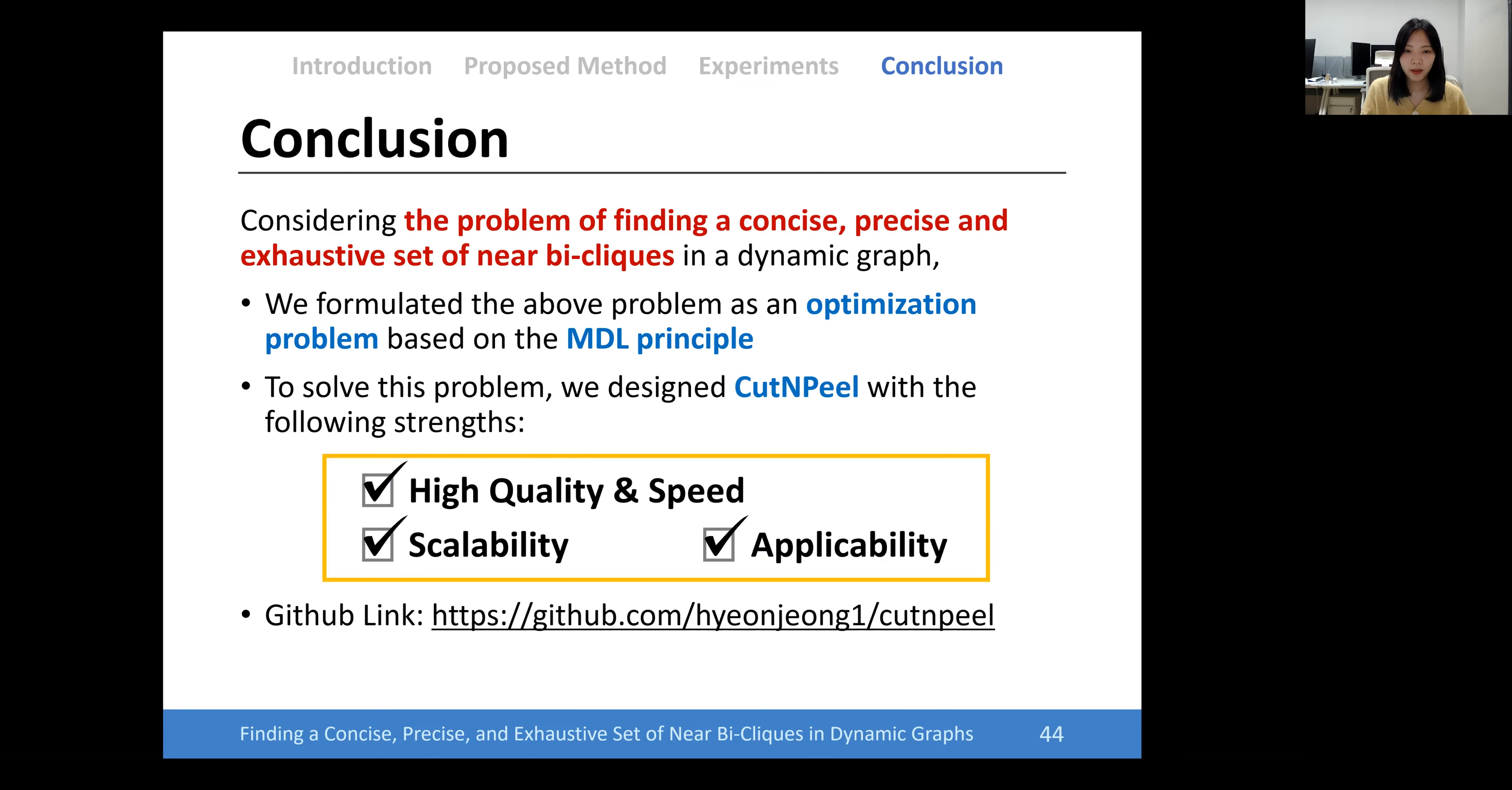To sum up, considering the problem of finding concise, precise, and exhaustive set of near bi-cliques in a dynamic graph, we formulated the problem as an optimization problem based on the MDL principle. We also designed Cut and Peel to solve the problem with strengths: high quality and speed, scalability, and applicability. This is the end of my presentation. Thank you for listening.